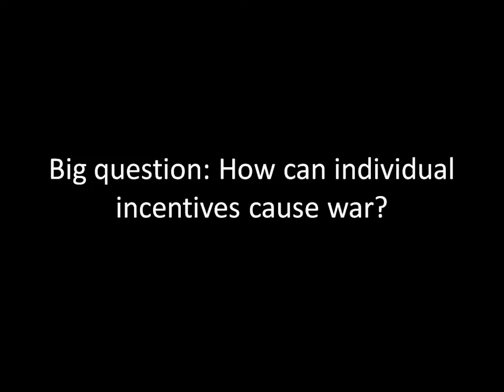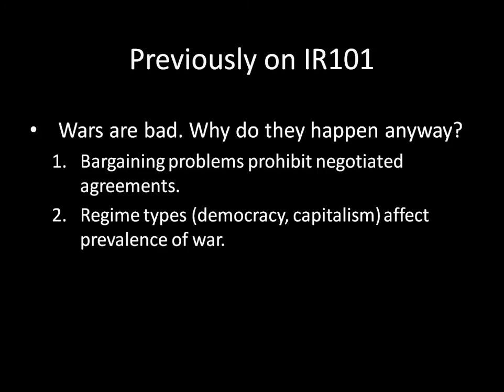Thinking back to what we've done previously on IR 101, we had a unit on war in general, and we know from that unit that wars are bad, wars are costly, they destroy things, they kill people — they're generally things that we want to avoid, and yet wars happen anyway. We've looked at possible explanations for why that might be the case. Starting in that unitary actor explanation for war unit, we saw that bargaining problems can prohibit negotiated settlements, even when the conditions would seem to be perfect for settlement, where wars are both costly and we have unbiased leaders who are acting perfectly — doing the perfectly intelligent thing — and yet we know wars can happen anyway.